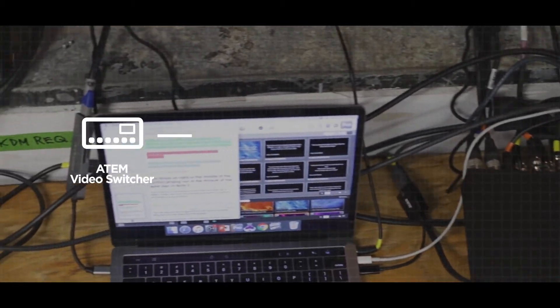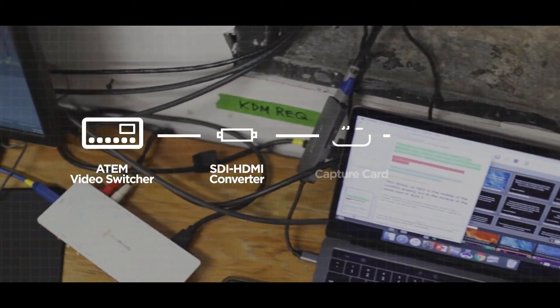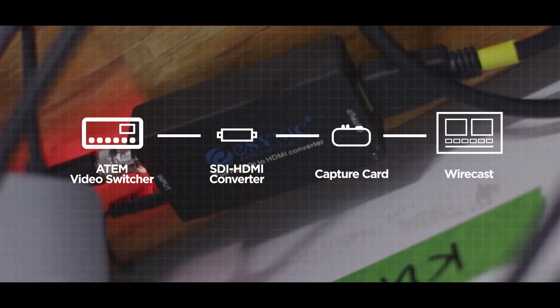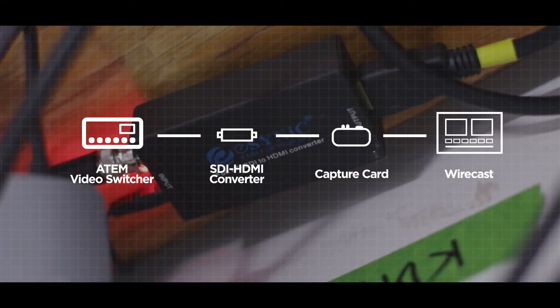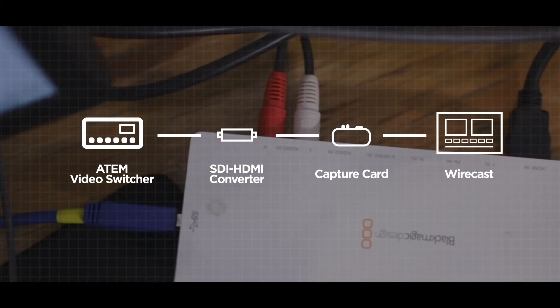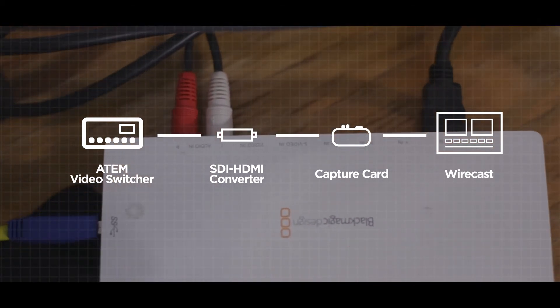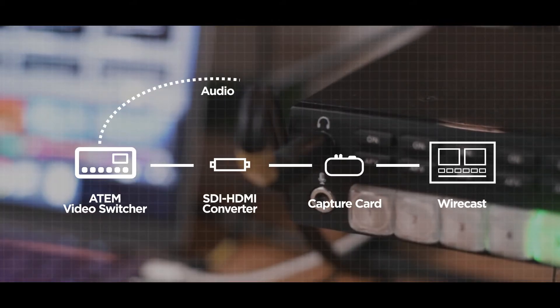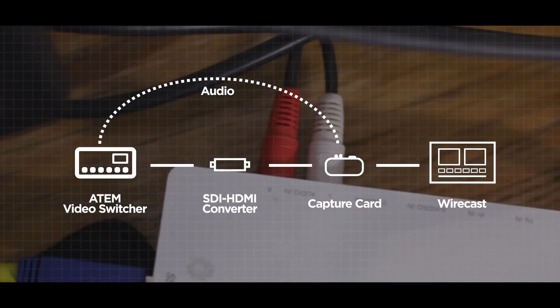If the audio and video are not showing up no matter what, we need to check elsewhere. If you were to follow the cables starting at the ATEM, you'll find that the program output leaves the ATEM unit and plugs into what's called an SDI to HDMI converter. The next cable plugs into what's called a capture card. This capture card is what lets us plug our video directly into the computer through a USB cable. Our audio for the ATEM runs separately, coming from the headphone jack of the ATEM directly into the capture card.